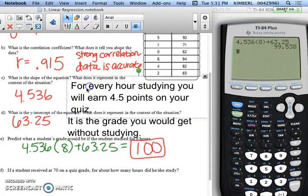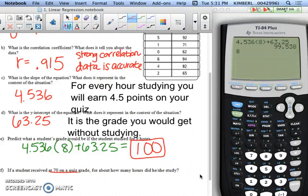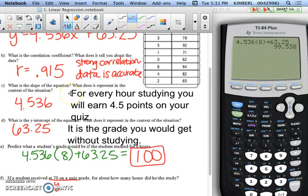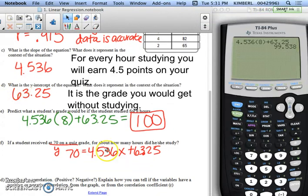Next one says, if a student receives a 70 on a quiz, how many hours did they study? Notice that this is a y value. Your quiz grades are in this y column, so when they give you a y value, you're going to have to input this 70 where this y is and solve for x. So when you plug it in, you would have 70 equals 4.536x plus 63.25. Anytime they give you a y value, you're going to have to solve a two-step problem for x.